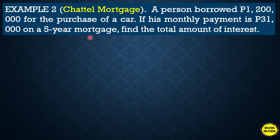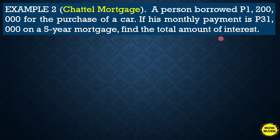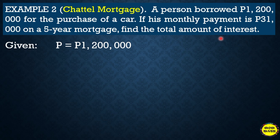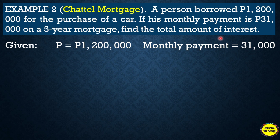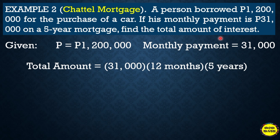Next is an example of chattel mortgage. A person borrows one million two hundred thousand for the purchase of a car. The monthly payment is thirty-one thousand on a five-year mortgage. We need to find the total amount of interest. The given values: the principal amount is one million two hundred thousand pesos, and the monthly payment is thirty-one thousand.